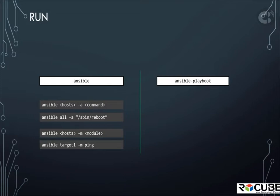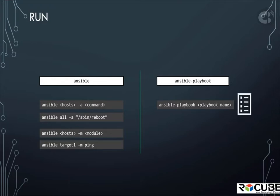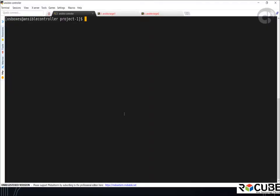The real usage of Ansible is with playbooks. We will now use the ansible-playbook command to execute those playbooks — that is a declarative approach. The playbooks can be saved on source code repositories like GitHub and managed centrally. Remember, the ansible-playbook command requires you to develop a playbook first.